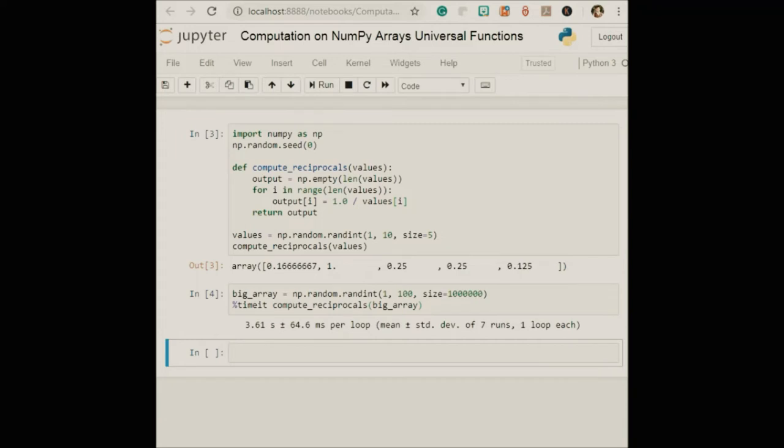This seems almost absurdly slow in the gigaflops of mobile phone speeds. It turns out that the bottleneck here is not the operations themselves, but the type checking and function dispatches that CPython must do at each cycle of the loop. Each time the reciprocal is computed, Python first examines the object's type and does a dynamic lookup of the correct function to use for that type. If you were working in compiled code instead, this type specification would be known before the code executes and the result could be computed more efficiently.